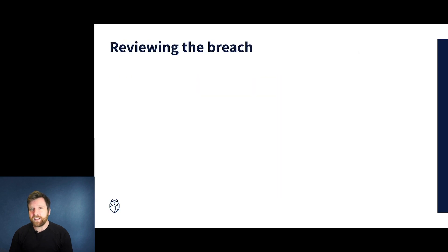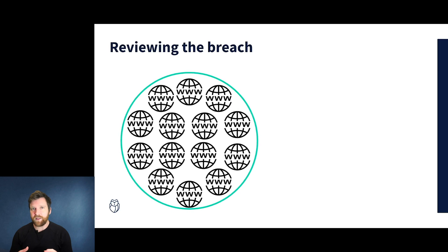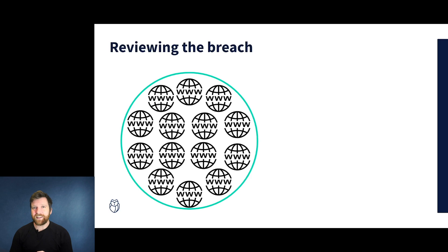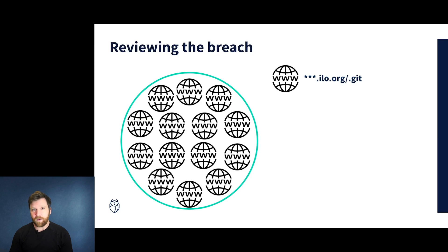The first thing the attackers did was set up a perimeter containing all of the domains covered under the vulnerability disclosure program. The UN has a large number of organizations within it, so identifying this perimeter was the first step. They then began fuzzing each and every one of these domains to try and identify subdomains and any root level directories that they could gain access to.